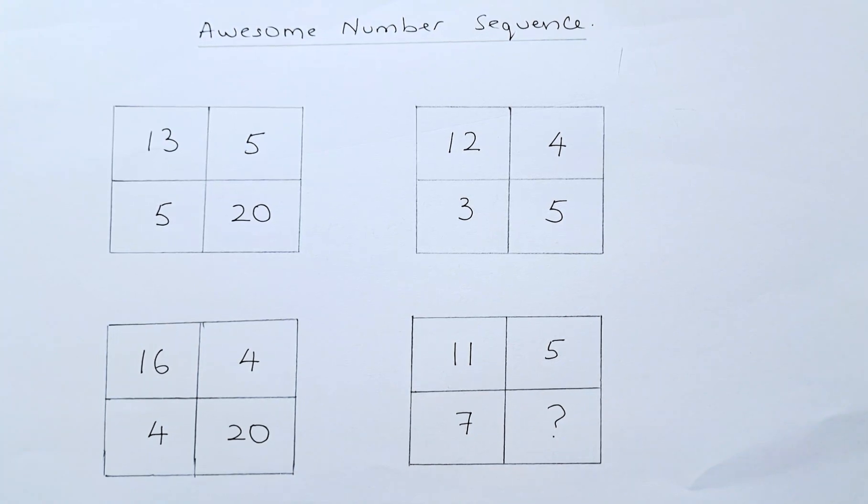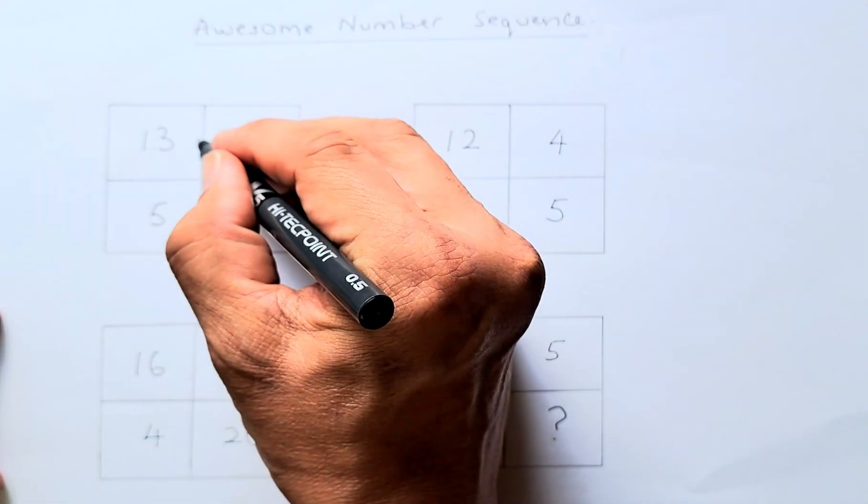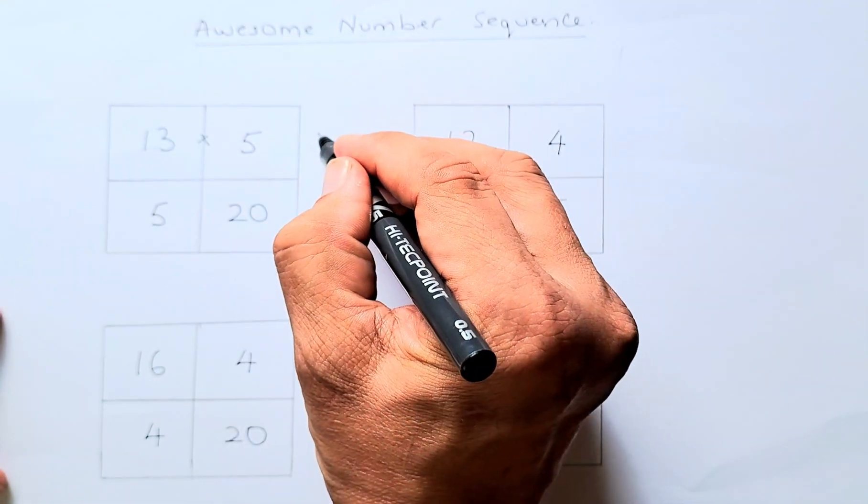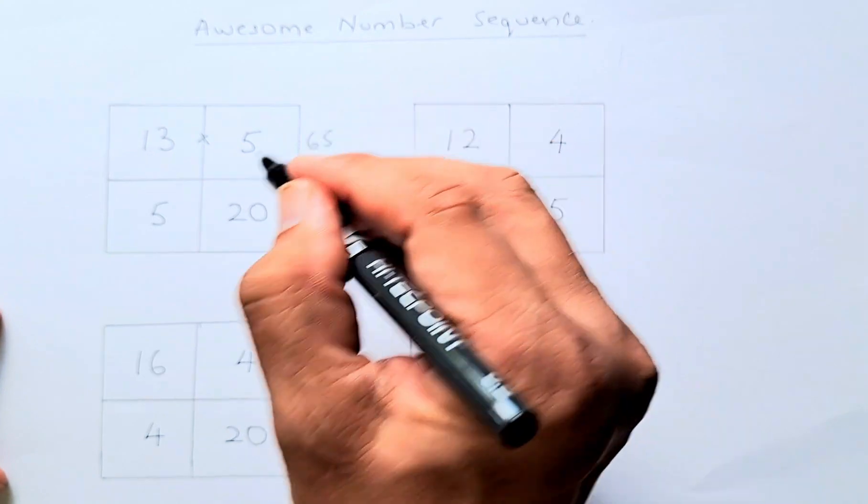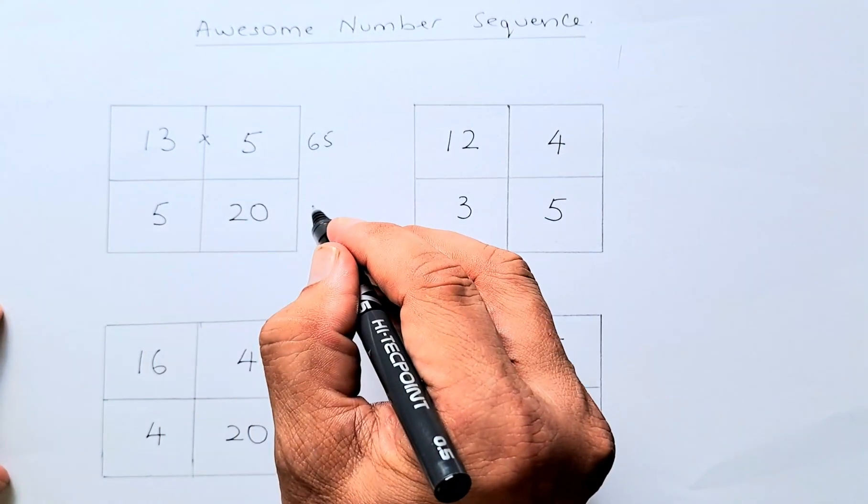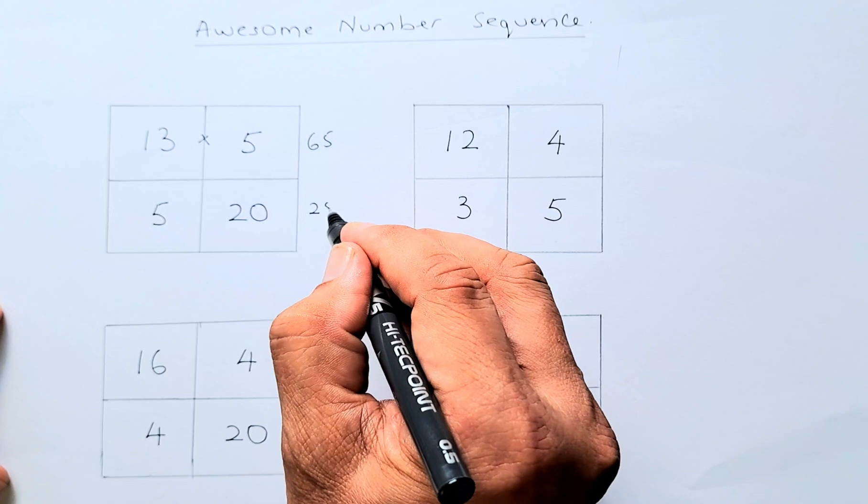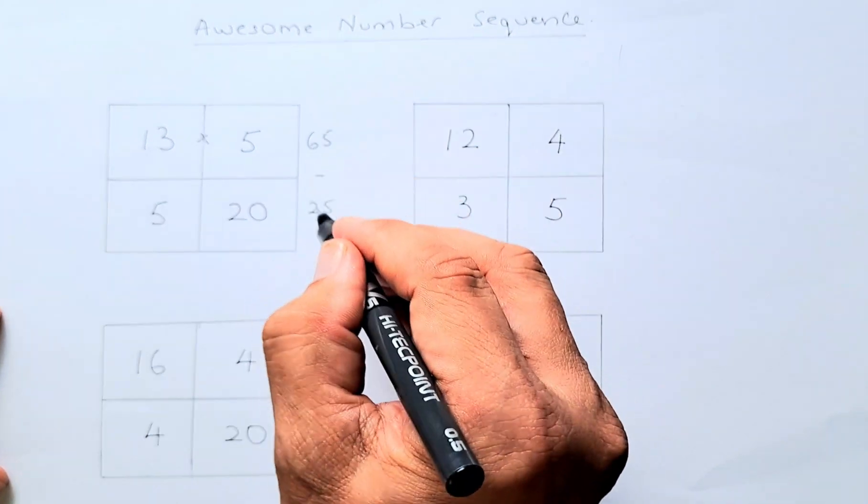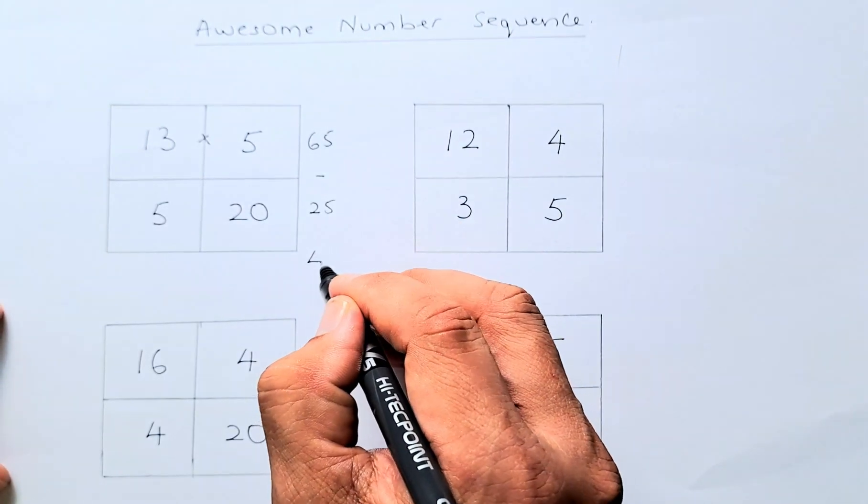If you take 13 times 5, that gives you 65. And then 5 plus 20 is 25. When you subtract them, 65 minus 25, the answer is 40.